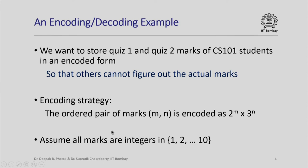We assume all marks are integers in the range 1 through 10. For those who know how any natural number can be factorized uniquely as a product of powers of primes: since 2 and 3 are prime numbers, given the number 2^m × 3^n, it is not difficult to extract m and n from this single number. Therefore this is indeed an encoding that can be decoded without any loss of information.